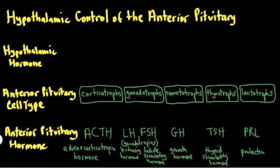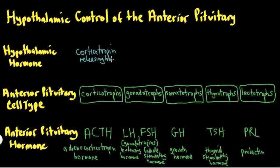Now let's talk about the control of these hormones through the hypothalamic hormones. Starting with the corticotrophs, the hormone that controls the release of ACTH is corticotropin-releasing hormone, abbreviated CRH. CRH stimulates the release of ACTH — since ACTH stands for adrenocorticotropin hormone, it makes sense that corticotropin-releasing hormone would stimulate its release.